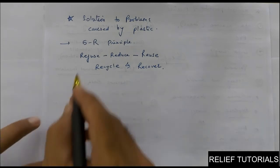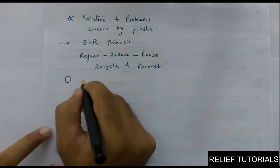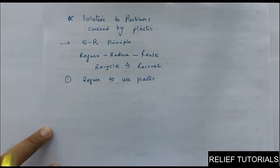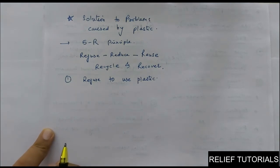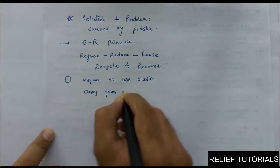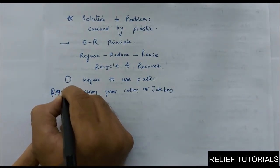First, Refuse — don't ask for plastic bags from shops or malls. Use your own cloth bag, jute bag, or cotton bag when you go for shopping. Refuse to use plastic as much as possible. Do not ask for plastic bags when going for shopping; instead, carry your own cotton or jute bag.